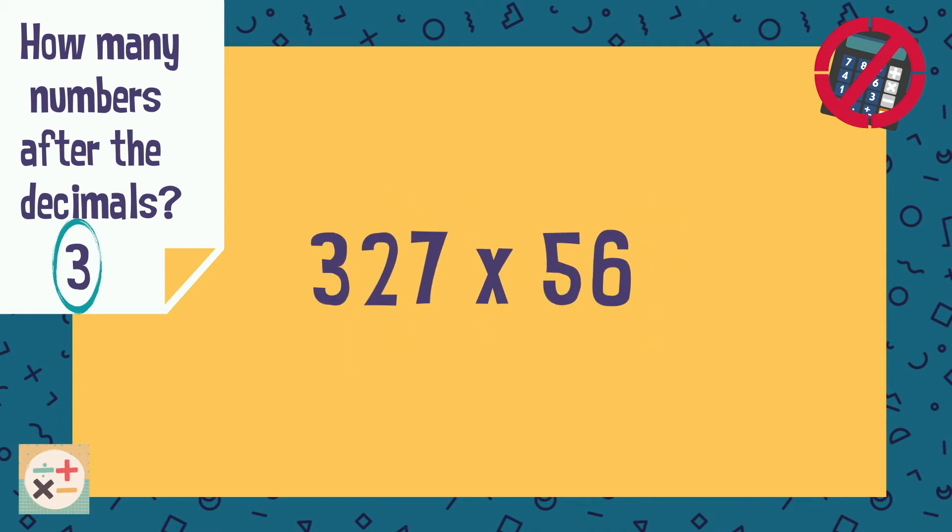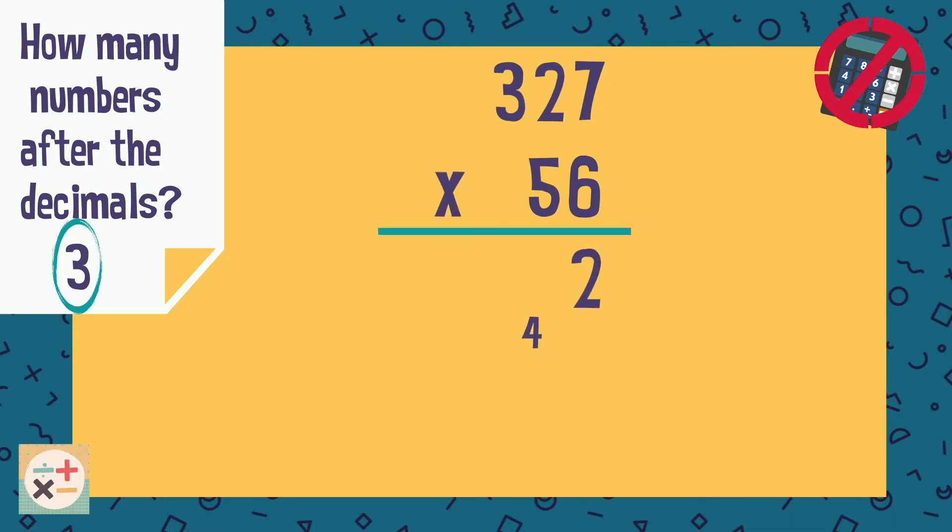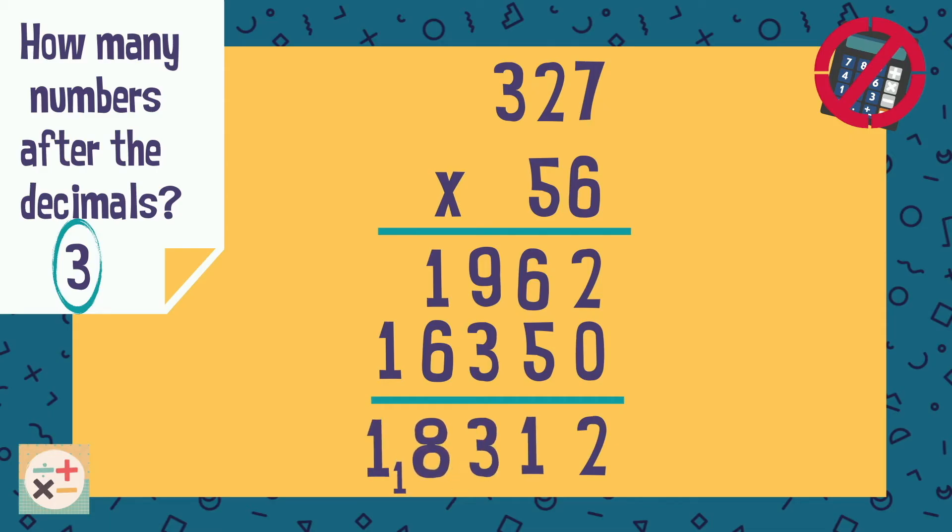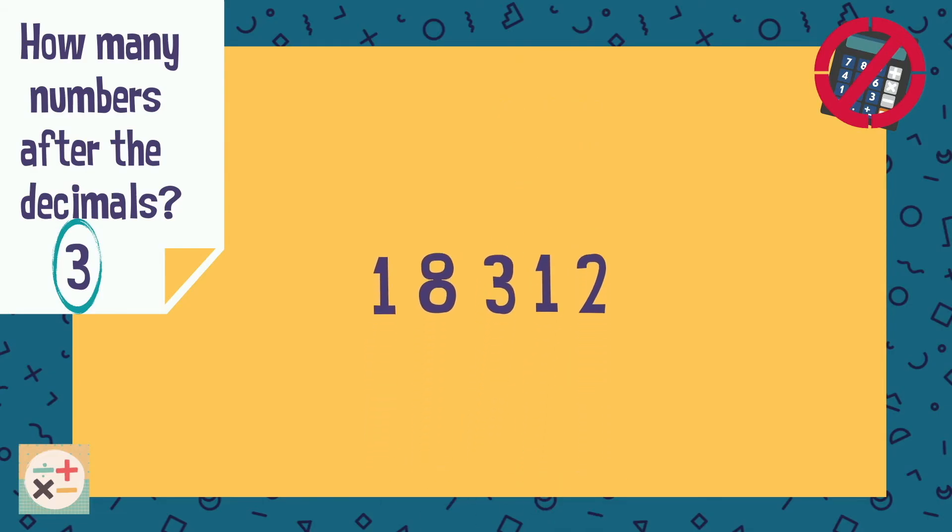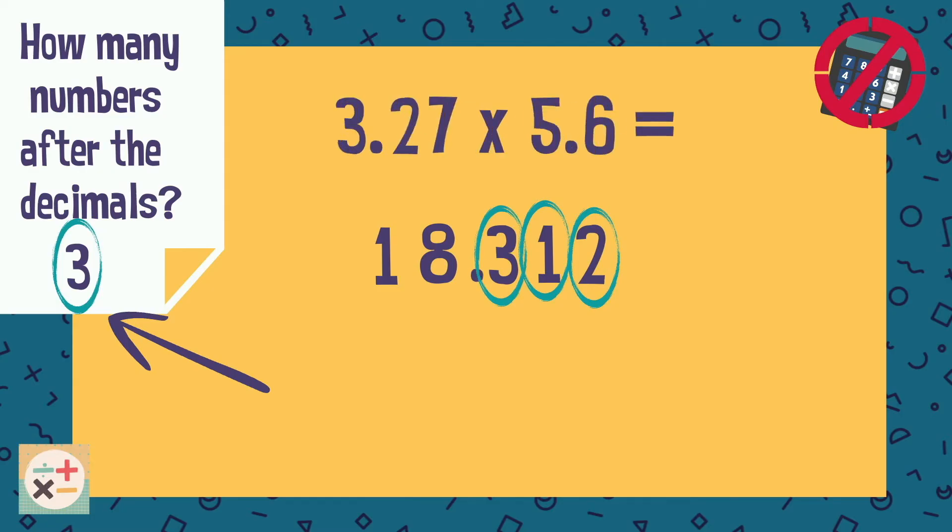Remove the decimal points. Multiply using your chosen method. In this case we are using the column method. Now place the decimal point in the answer, remembering how many numbers were after the decimal point in the question. This is how many numbers will be after the decimal point in the answer.